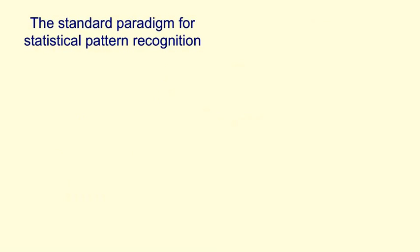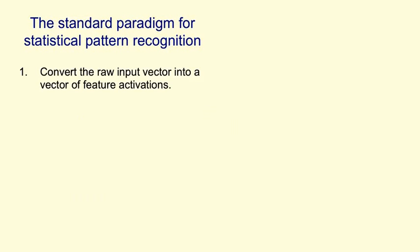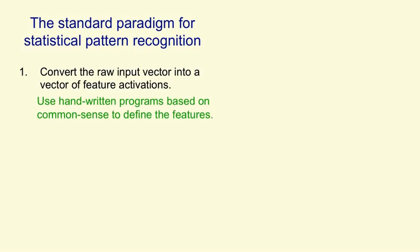In statistical pattern recognition, there's a standard way to recognise patterns. We first take the raw input and convert it into a set or vector of feature activations. We do this using handwritten programmes which are based on common sense, so that part of the system does not learn. We look at the problem, decide what the good features should be, try them out, and eventually get a set of features that allows us to solve the problem using a subsequent learning stage.